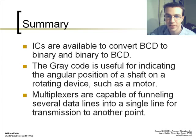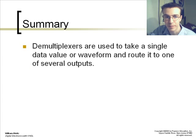The gray code is useful for indicating the angular position of a shaft on a rotating device, such as a motor. Multiplexers are capable of funneling several data lines into a single line for transmission to another point. And lastly, demultiplexers are used to take a single data value or waveform and route it to one of several outputs.